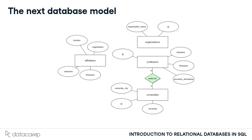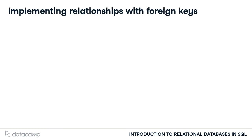Next up, you'll model a so-called relationship type between professors and universities. As you know, in your database, each professor works for a university. In the ER diagram, this is drawn with a rhombus. The small numbers specify the cardinality of the relationship. A professor works for at most one university, while a university can have any number of professors working for it, even zero. Such relationships are implemented with foreign keys.